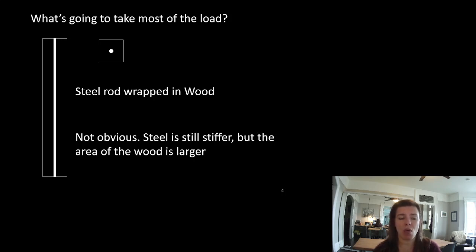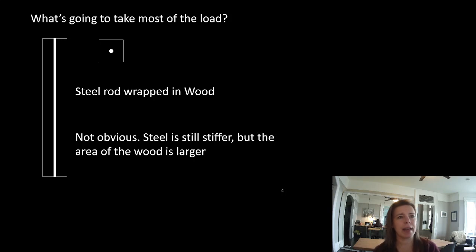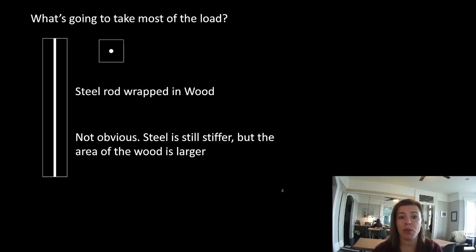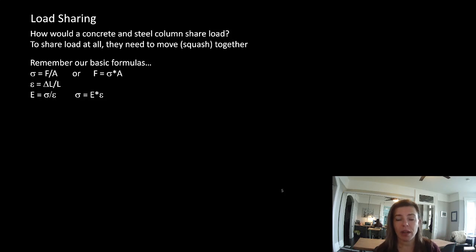With wood around the steel rod, if we put a book on top and stand on it, it's not obvious which one will take more of the load. We know steel is way stiffer, but the area of the wood is larger and the wood is not so much less stiff that it does nothing. One thing we do know is that if we squash that steel rod, the wood would be moving with it — they have to be moving together.